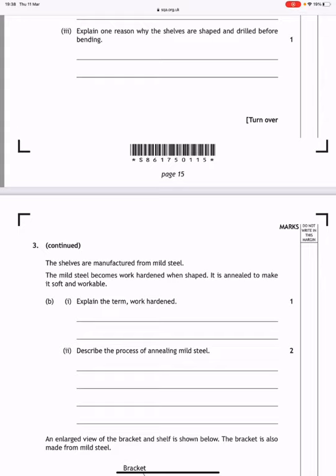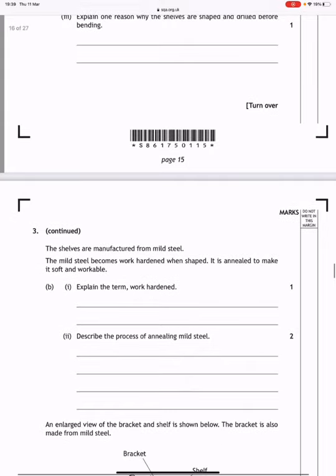The shelves are manufactured from mild steel. The mild steel becomes work hardened when shaped and is annealed to make it soft and workable. Explain what is meant by the term work hardened. Well, basically, if you're working with a metal, you might be filing it or rubbing it down or shaping it, it can become what's called work hardened, where the metal becomes really hard and brittle. So if you try to bend it, it might break. So you need to anneal it.